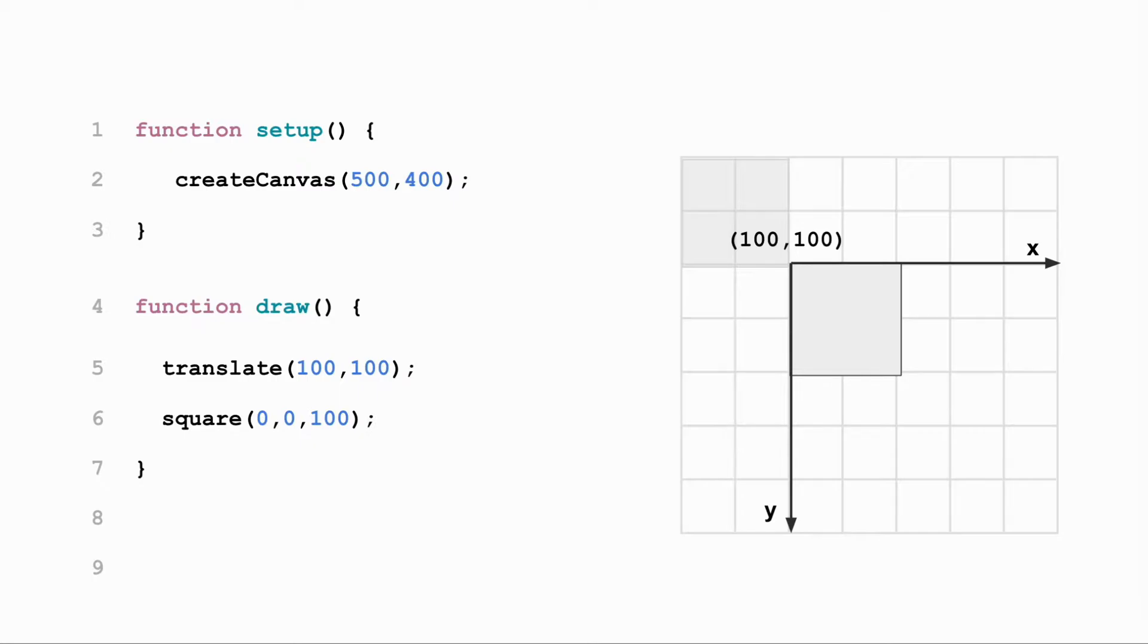The translate function changes the origin point of the coordinate system, meaning the x-coordinate and y-coordinate of the origin of the plane will be shifted by the amount of pixels passed to the translate function. For example, if translate 100,100 is called before drawing the square, the origin will shift 100 pixels to the right and 100 pixels down before drawing the square, making the origin 0,0 now located at 100,100.